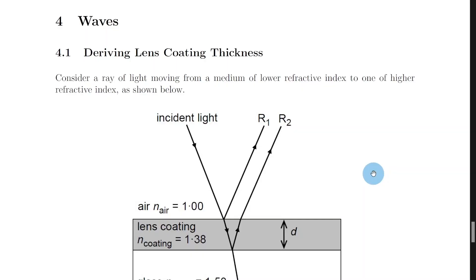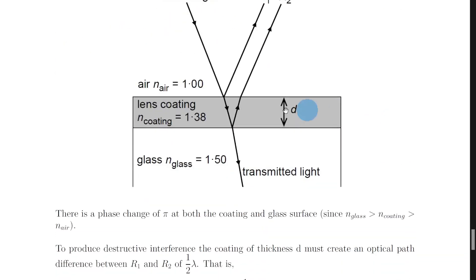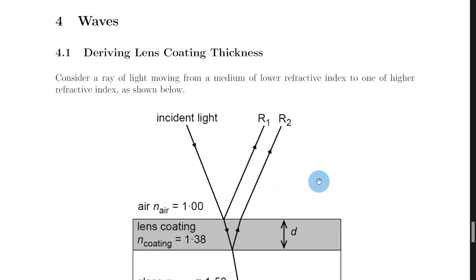In the waves topic for advanced physics we look at something called blooming of lenses, which is an application of interference by division of amplitude. Blooming of lenses involves placing a special coating over a lens in order to ensure maximum light transmission through the lens. This requires the destructive interference of any reflected light, i.e. the cancelling out of particular wavelengths, so that we can ensure maximum light transmission through the lens. You could be asked to derive an expression for lens coating thickness d, and the equation we want to get to is d equals lambda divided by 4n.